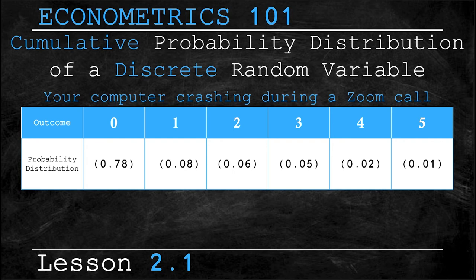a 2% probability it crashes four times, and a 1% probability that your computer crashes five times during the call. Now in this example we are assuming that if your computer crashes five times you're just going to give up on the call altogether. So that assumption means that the only possible outcomes for the number of times your computer crashes are 0, 1, 2, 3, 4, and 5. That's your sample space.